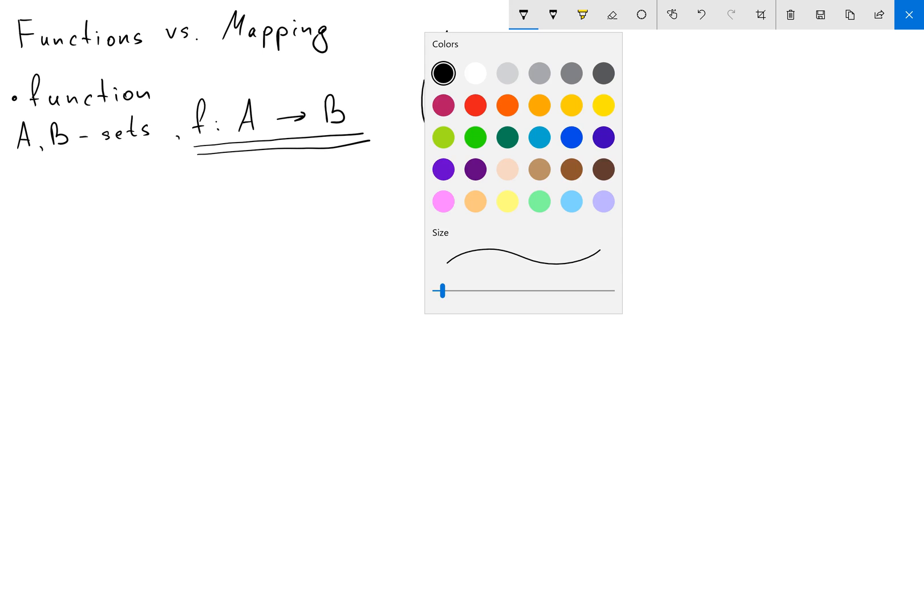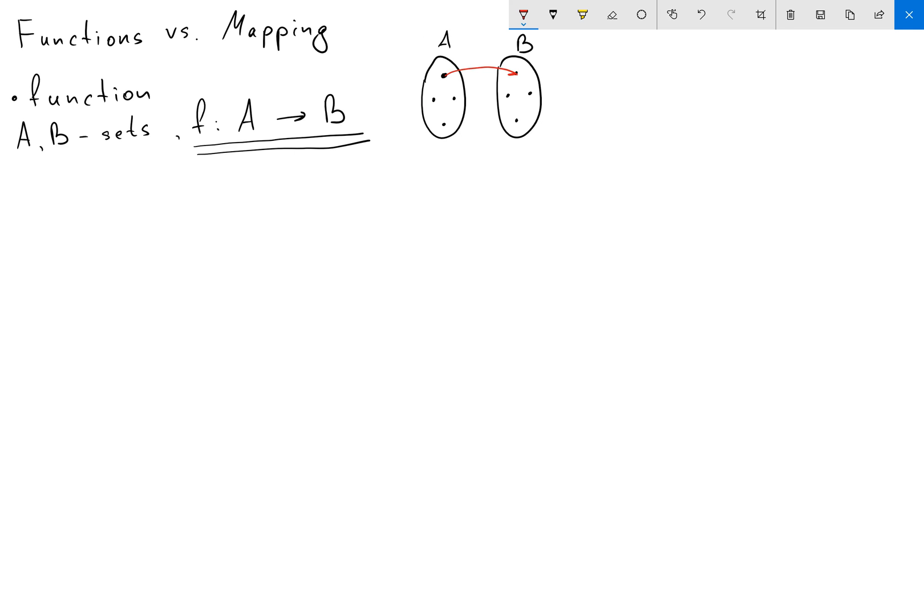for each element in my set A I'm gonna find the corresponding only one element in set B. So my function is not to map to more than one element.